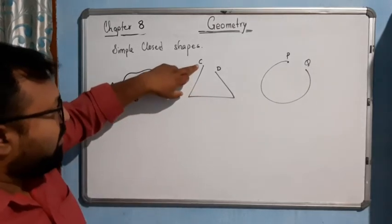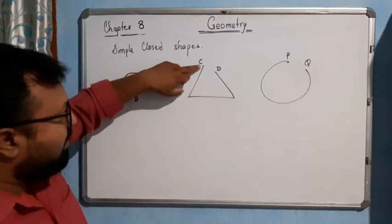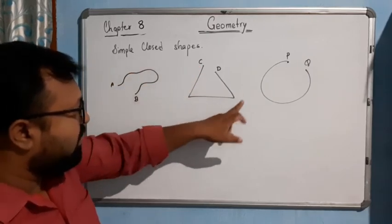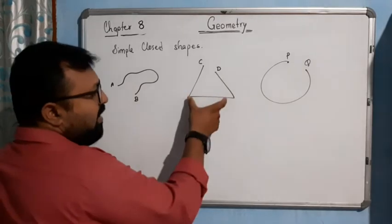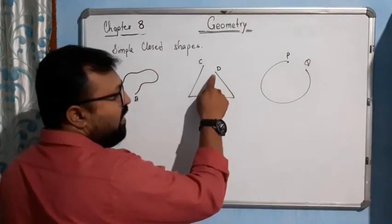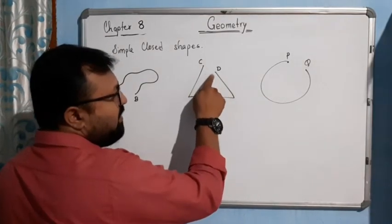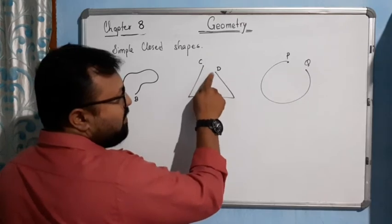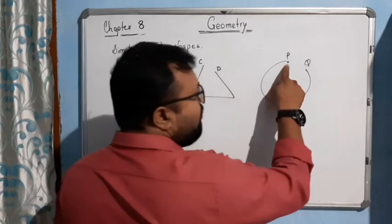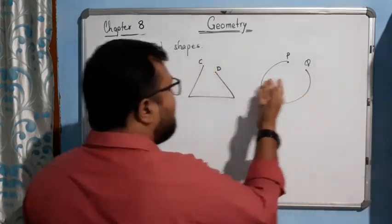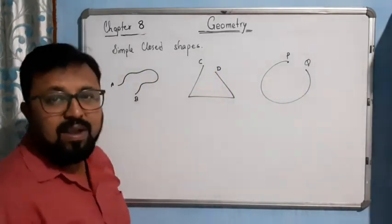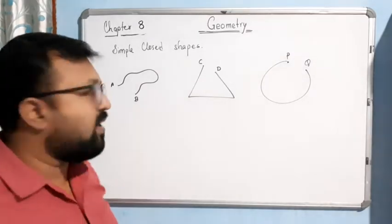Here also, I started drawing from point C, with straight line segments, and I end here at point D. See, there is a difference — there is a distance between C and D, it does not end at the same point. Here also, P and Q are far apart. So this type of figure is known as an open figure or open shape.